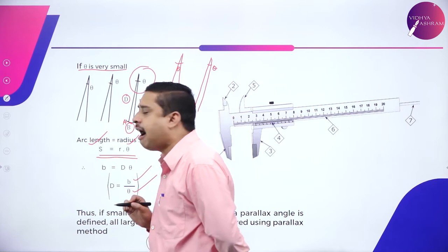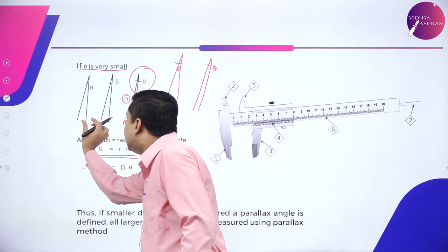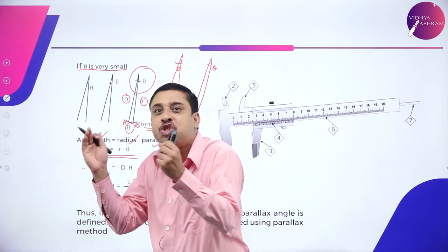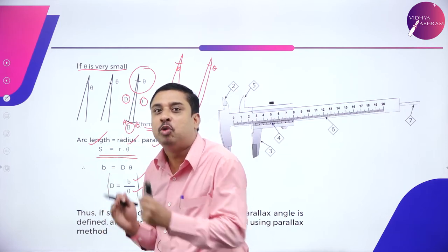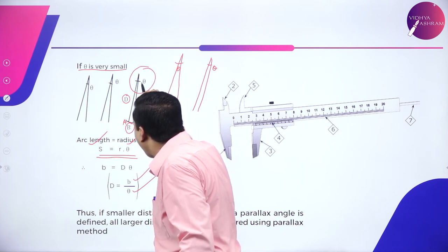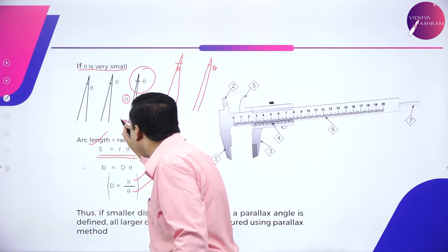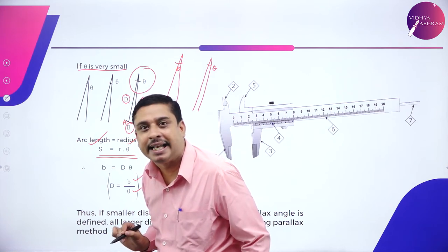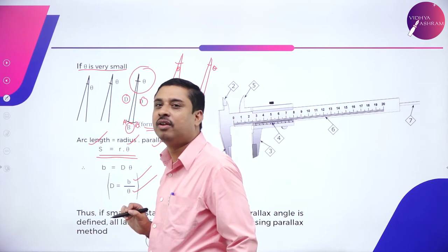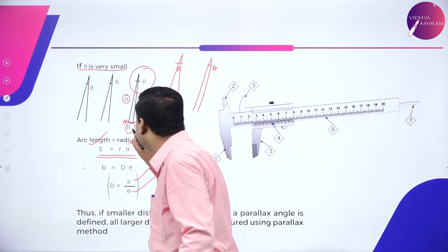if theta is considered to be small, as theta goes on decreasing, the distance between these two lines contracts, it shrinks, the two waves come close to each other. So, for a particular least possible value of theta, now the distance will form an arc. Now, no longer it remains a straight line.